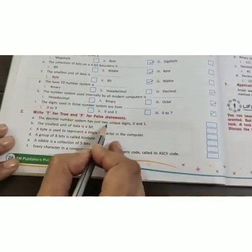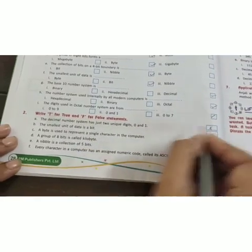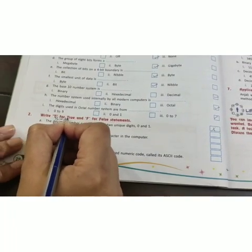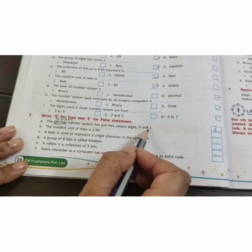The decimal number system has two unique values 0 and 1 that is false. Instead of decimal it will be binary. Binary number system has just two unique digits 0 and 1.